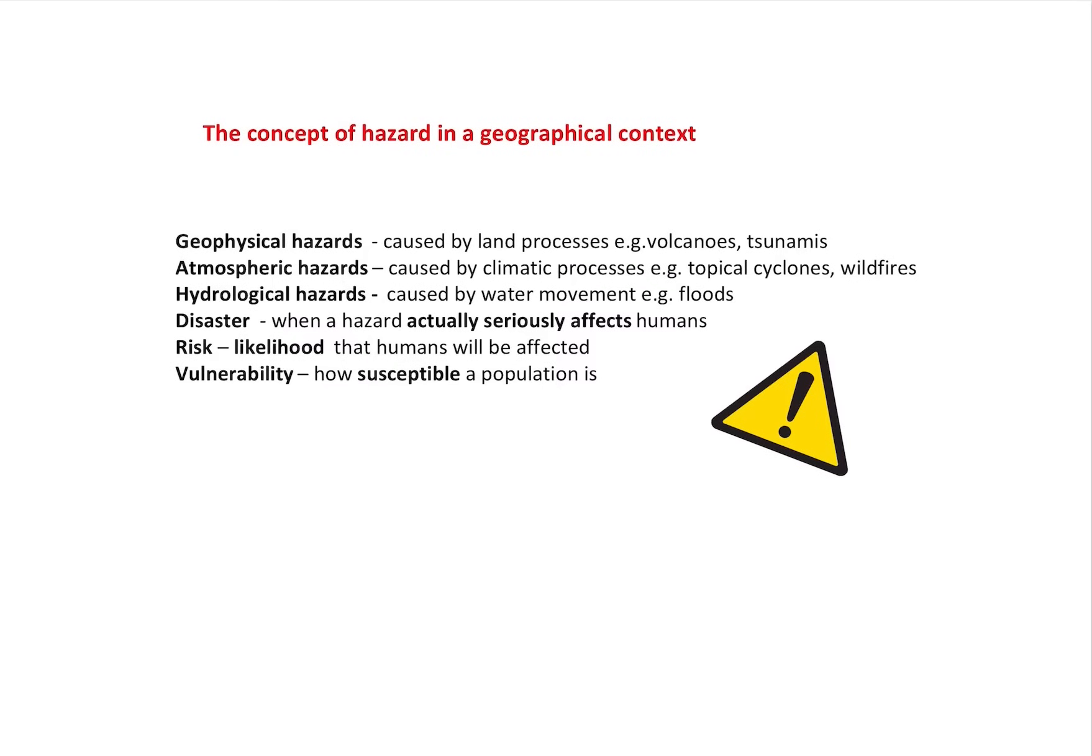And from that, I can branch out a little bit further and call them a disaster when it seriously affects humans. The hazard risk is thinking about the likelihood that people are going to be affected. And people's vulnerability then is just how susceptible a population is to that particular hazard.